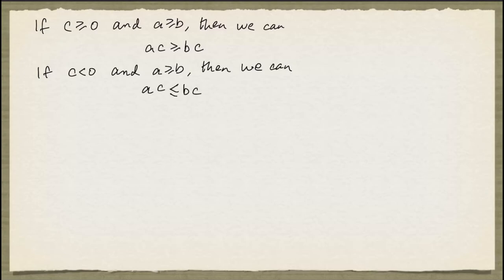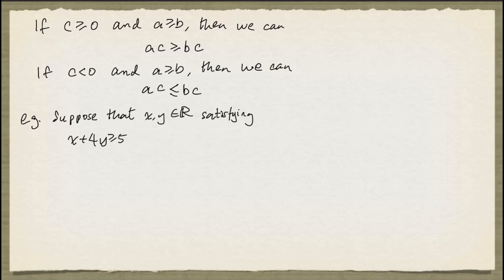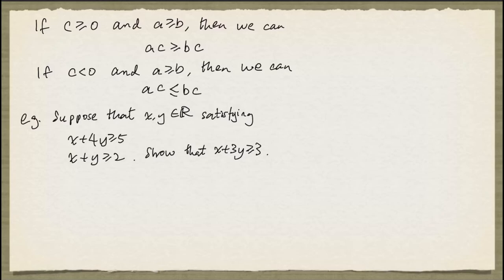Let's now look at an example showing how these operations for inference can solve some interesting problem. Suppose that x and y are real numbers satisfying x plus 4y greater than or equal to 5 and x plus y greater than or equal to 2. And we are asked to show that x plus 3y is greater than or equal to 3. So what can we do here? Well, the only operations we can perform are multiplying an inequality by a non-negative number and adding inequalities given that they have the same sense. So we're going to try to manipulate these inequalities in such a way that the left hand side becomes x plus 3y.